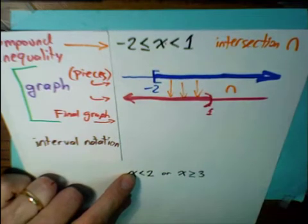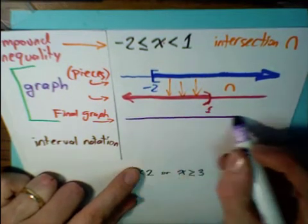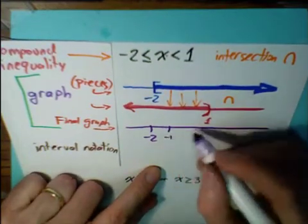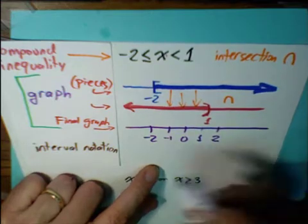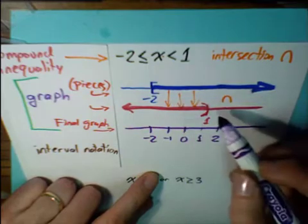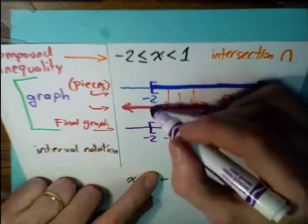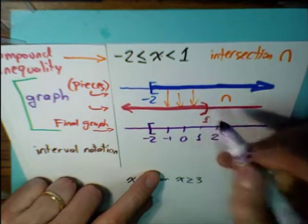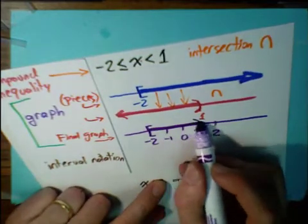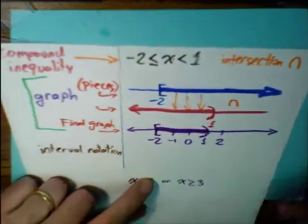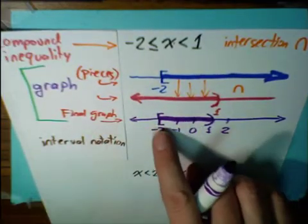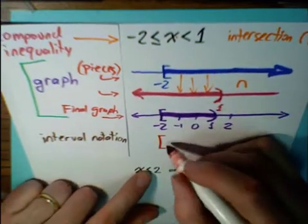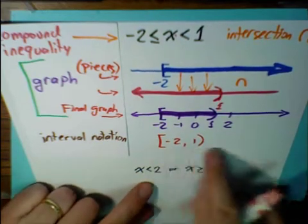Whatever is shaded on both graphs is what we want in our final graph. Our final graph has a bracket at negative 2 and a parenthesis at 1. Negative 2 is shaded on both graphs, so we include it with a bracket. The point 1 is shaded on the first graph but not on the second, so we use a parenthesis and shade between them. Writing the interval notation is just a matter of copying what's in the graph: bracket, negative 2, comma, 1, parenthesis — giving us [-2, 1).